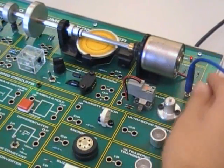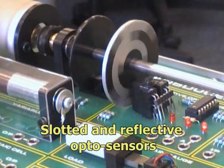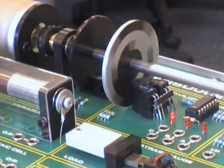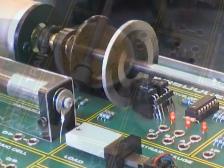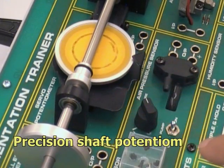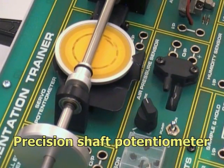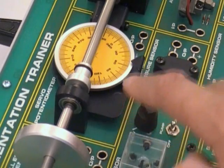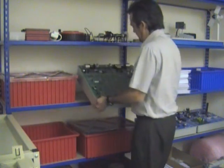The trainer also features a shaft assembly that carries a DC motor, TACO generator, slotted and reflective optosensors for incremental and absolute position, and a 360-degree precision potentiometer with indicator dial for closed-loop position control experiments.